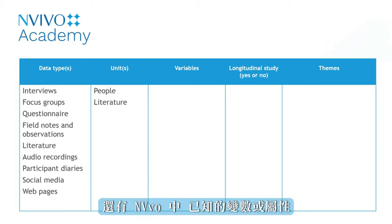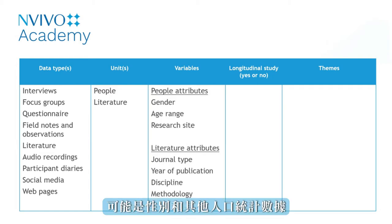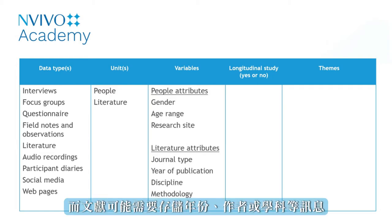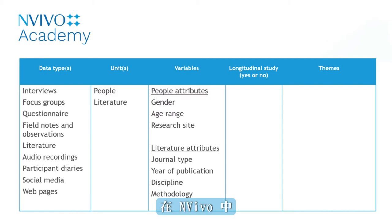Next, there are variables or attributes as they are known in NVivo. People attributes may be gender and other demographics, while literature may require information such as year, author, or discipline to be stored in NVivo. Attributes are organized together as classifications.